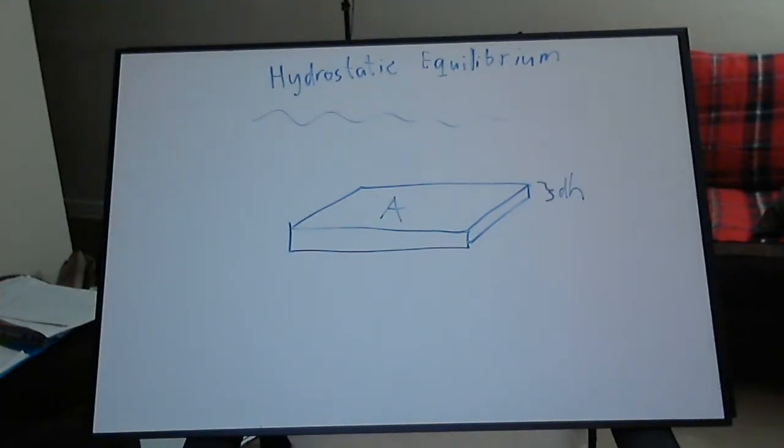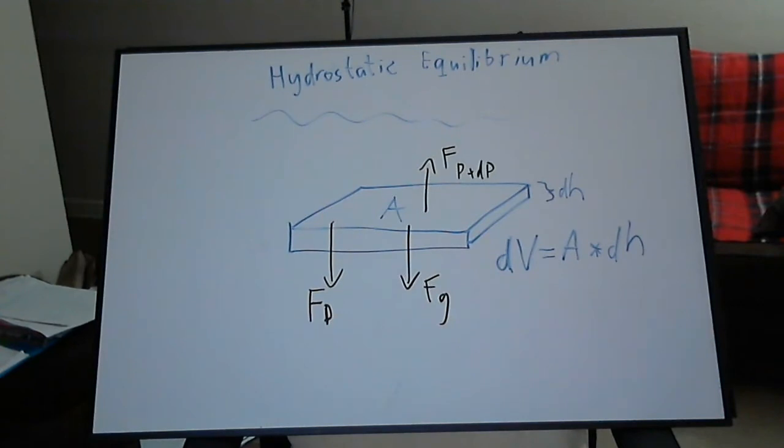It started with a sample volume within the fluid of differential depth dH for which we have applied the conditions for hydrostatic equilibrium starting with a free body diagram for all the forces acting on the object. These forces included the gravitational force Fg as well as forces due to pressure from both above and below.